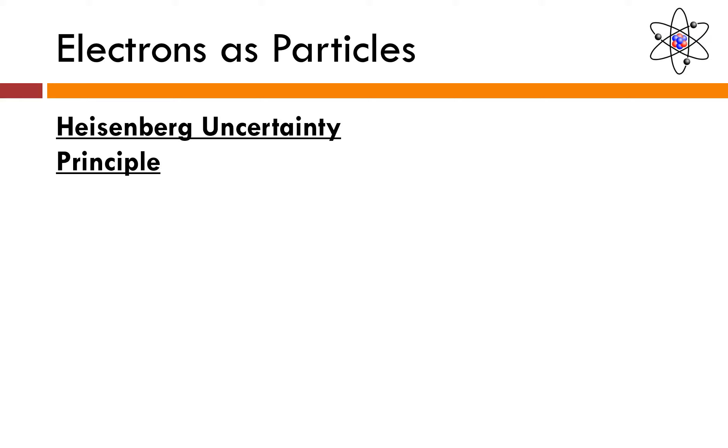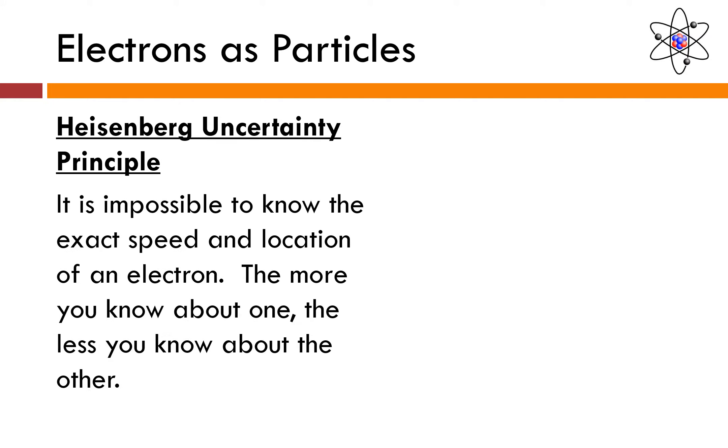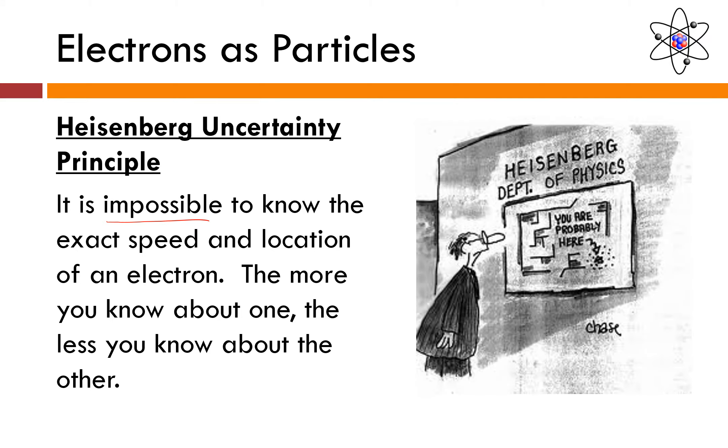And one of his most noteworthy contributions is the Heisenberg uncertainty principle. According to the Heisenberg uncertainty principle, it is impossible to know the exact speed and location of an electron. The more you know about one, the less you know about the other. And this is something that stands in stark contrast to what we're used to observing in everyday life.